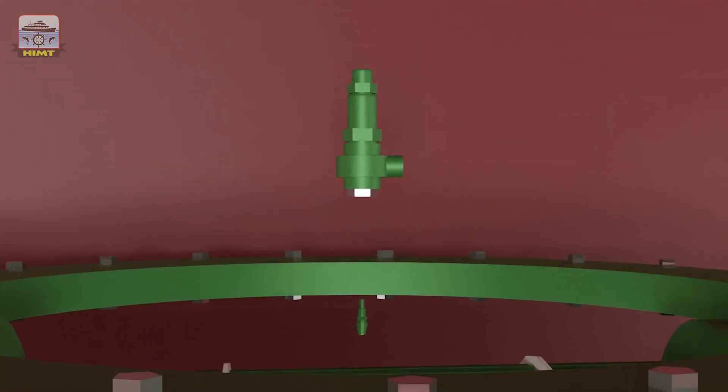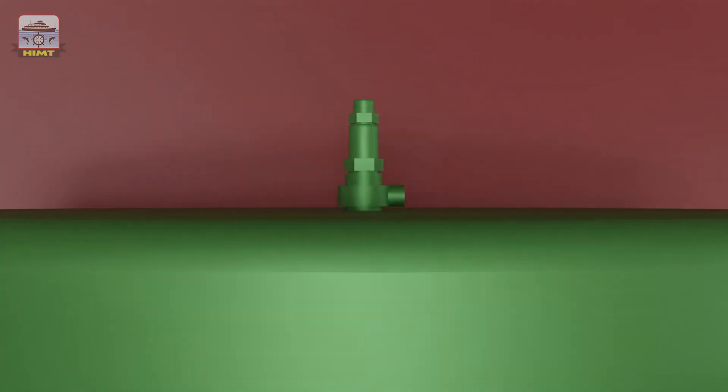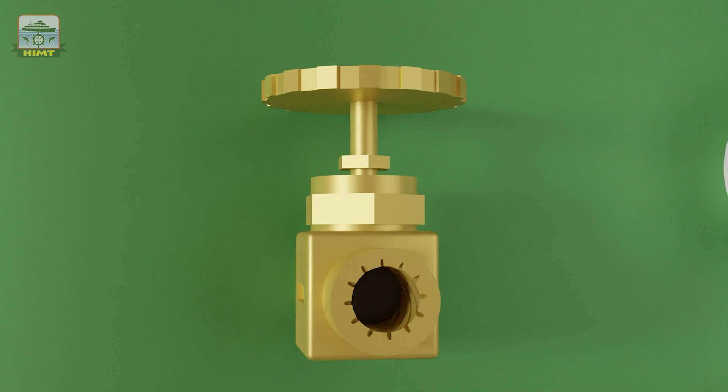Next we have a safety valve. Safety is of utmost importance, and that's why a safety valve is installed to safeguard against overpressure. We must also consider the vacuum breaker, which comes into action when the fresh water generator is stopped. Its purpose is to break the vacuum, allowing for a smooth shutdown of the system.